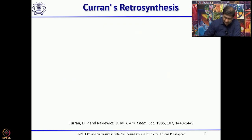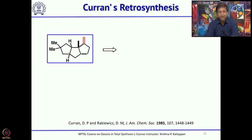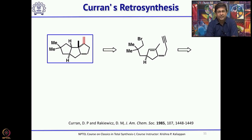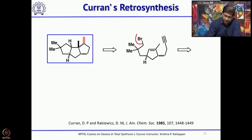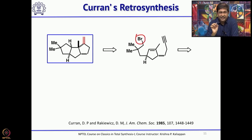The first natural product where a tandem radical cyclization was used as the key step was hirsutene. This sesquiterpene cleverly used a tandem 5-exo radical cyclization as well as a Claisen rearrangement to prepare the starting material for the key radical cyclization — one of the earliest examples of Curran's radical cyclization. Once you see a double bond and three five-membered rings, one can easily think about a 5-exo radical cyclization reaction.